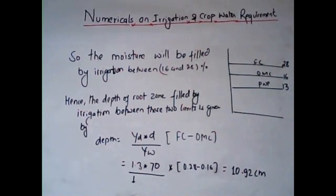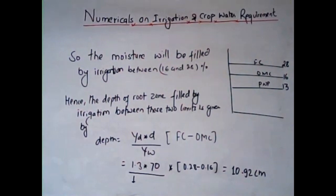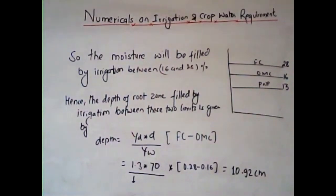The moisture will be filled by irrigation between the moisture content of 16% and 28%. The gap between the field capacity and optimum moisture content represents the effective root zone of the plant. The depth of root zone filled by irrigation between these two limits can be determined by the formula: depth = (dry density of soil × effective depth × (FC − OMC)) / unit weight of water.